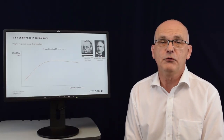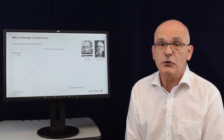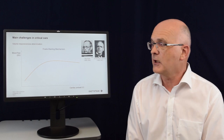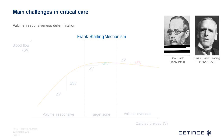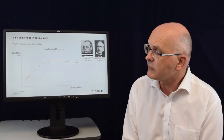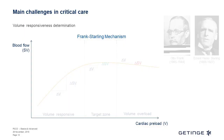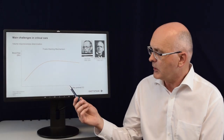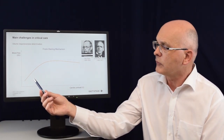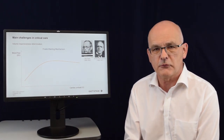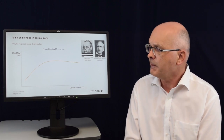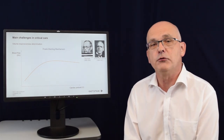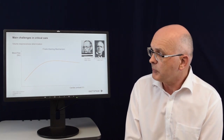When we talk about fluid administration, we also need to look at the so-called Frank-Starling mechanism. This idea was created by the German physiologist Otto Frank and the British physiologist Ernest Henry Starling. Looking at this graph, we can see the relation between blood flow, stroke volume or cardiac output, and the cardiac preload — the blood volume. When we increase the preload, this will also increase the blood flow. But this is not unlimited, because the heart has limited expansion abilities and there is a point where fluid administration will no longer benefit the patient.